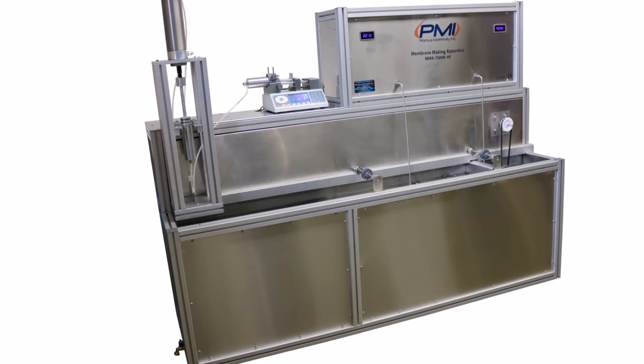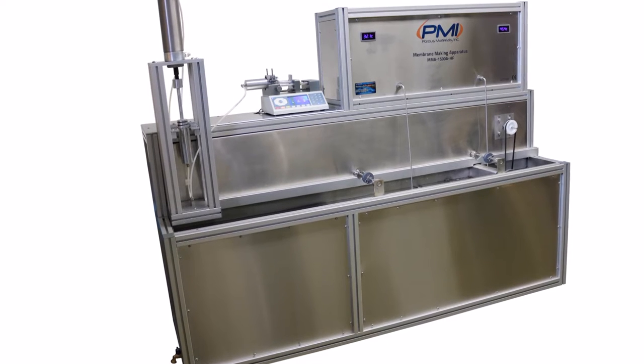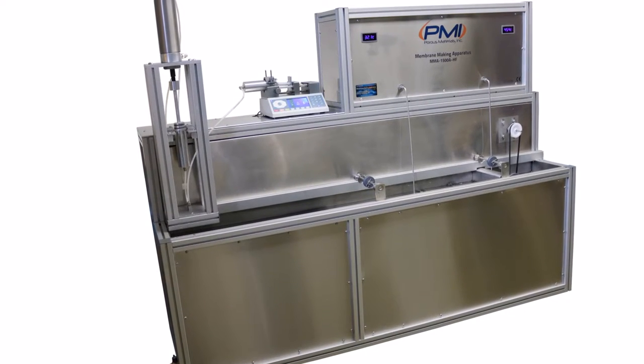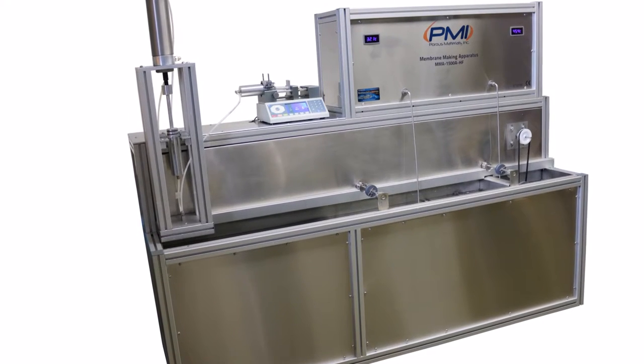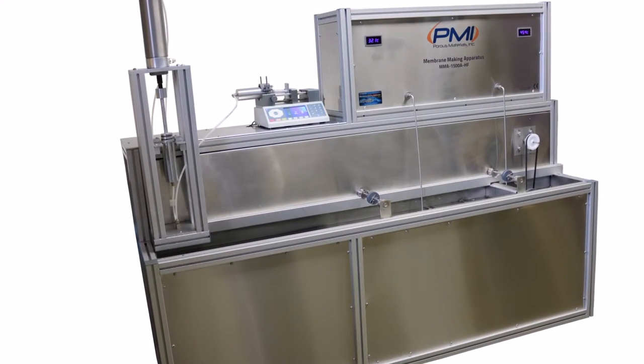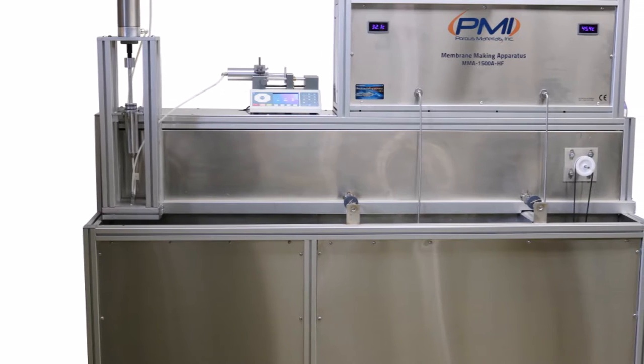Porce Materials Incorporated is proud to present the hollow fiber membrane making apparatus. This machine is capable of making hollow fiber polymeric membranes with outer diameters between 0.8 and 2 millimeters from any conventional polymer.